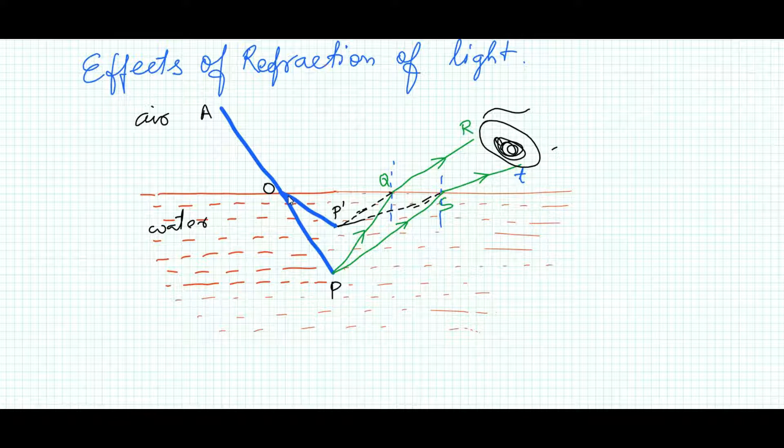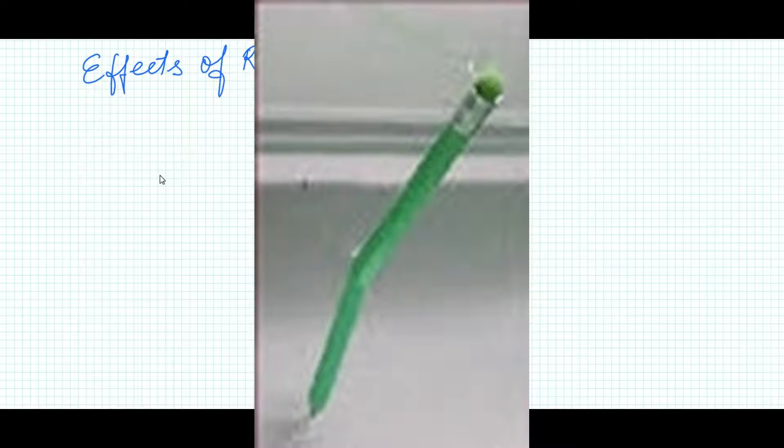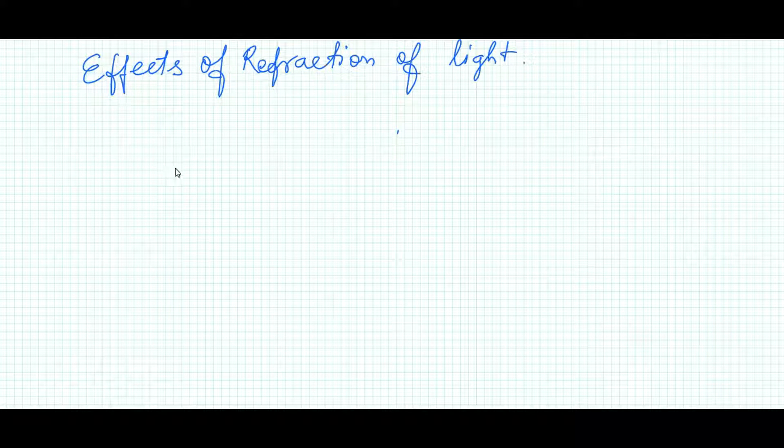Refraction of light produces many effects which can be easily observed in our day-to-day life. For example, if a stick is dipped or partly immersed in water, it appears bent at the junction of the two mediums, air and water.